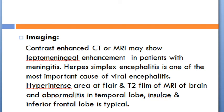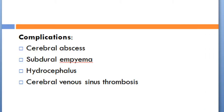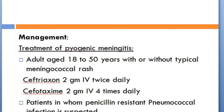Imaging includes contrast-enhanced CT or MRI, which may show leptomeningeal enhancement in patients with meningitis. Herpes simplex encephalitis is one of the most important causes of viral encephalitis. Hyperintense areas on FLAIR and T2 sequences of brain MRI with abnormalities in the temporal lobe, insular, and inferior frontal lobe are typical. This MRI shows hyperintense signal in the temporal region, indicating herpes simplex encephalitis. Complications of meningoencephalitis include cerebral abscess, subdural empyema, hydrocephalus, and cerebral venous sinus thrombosis.